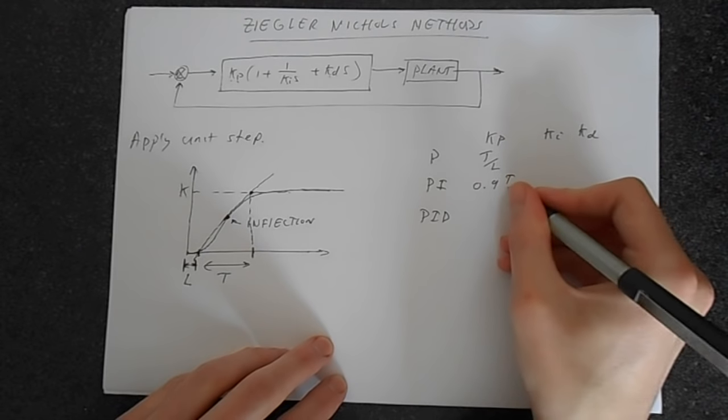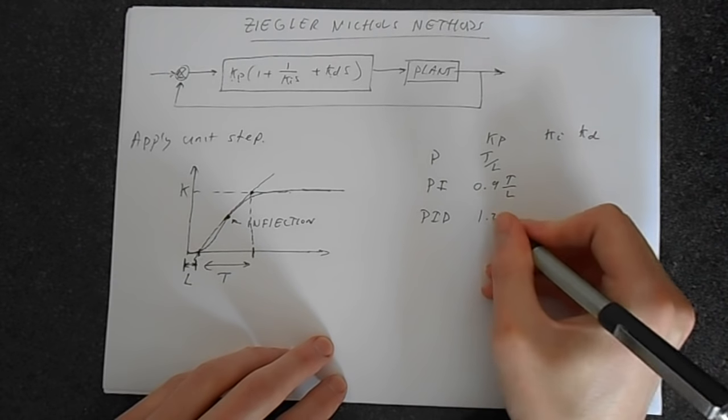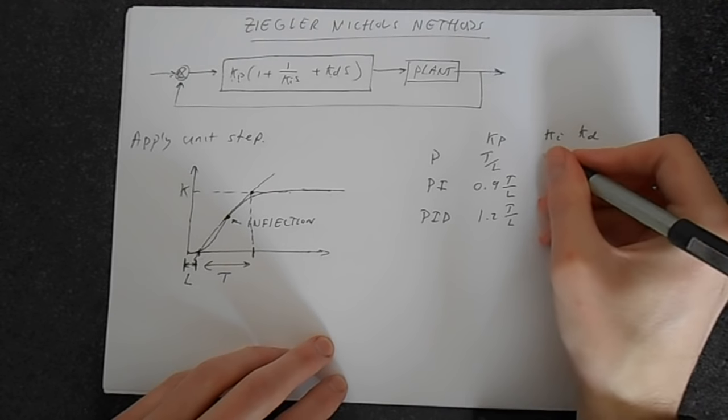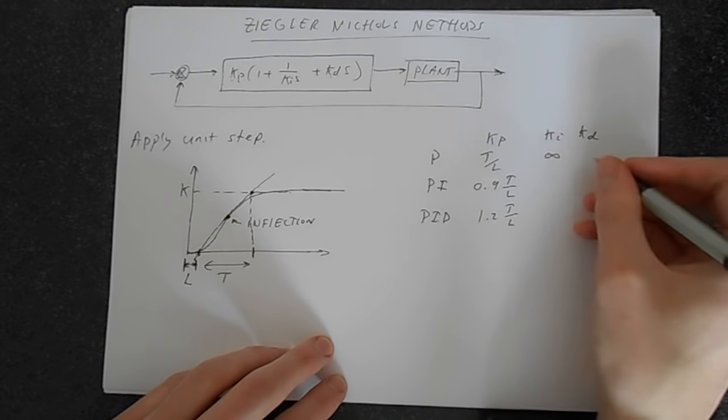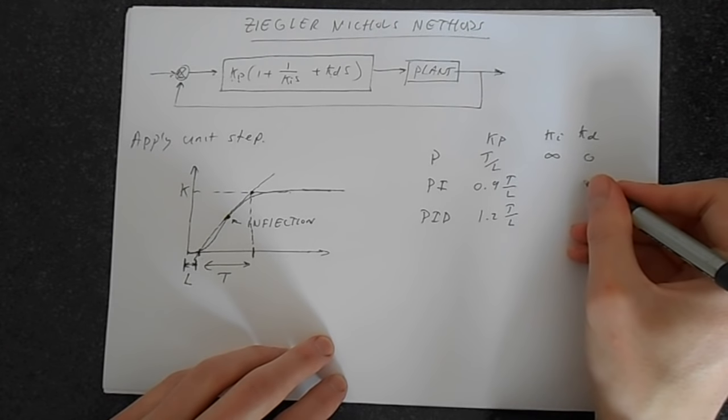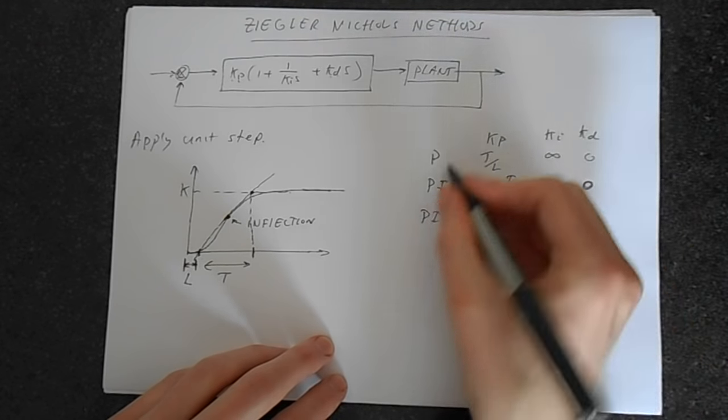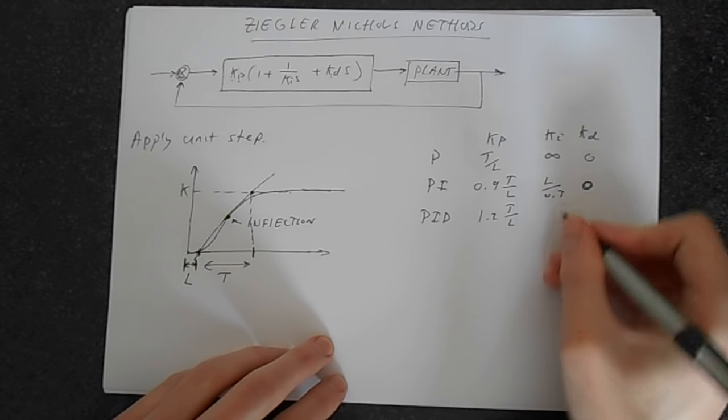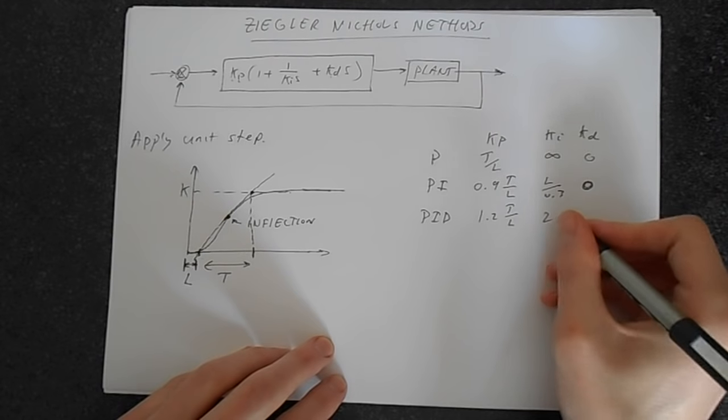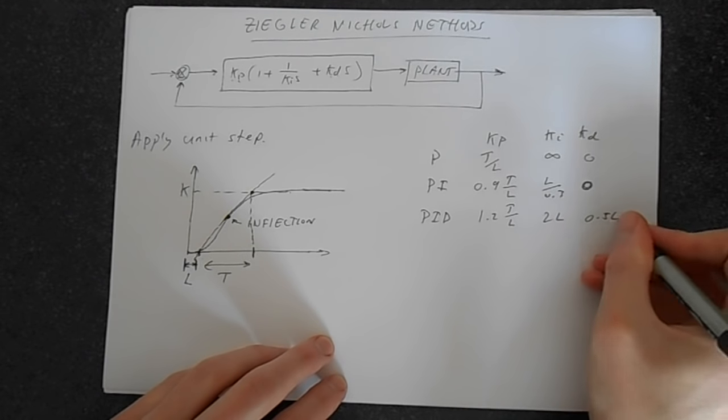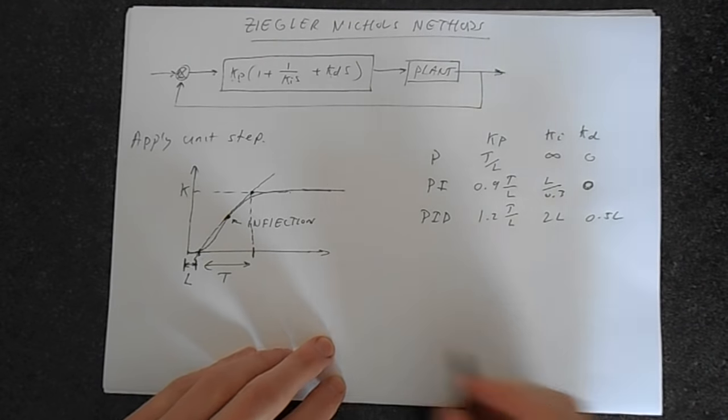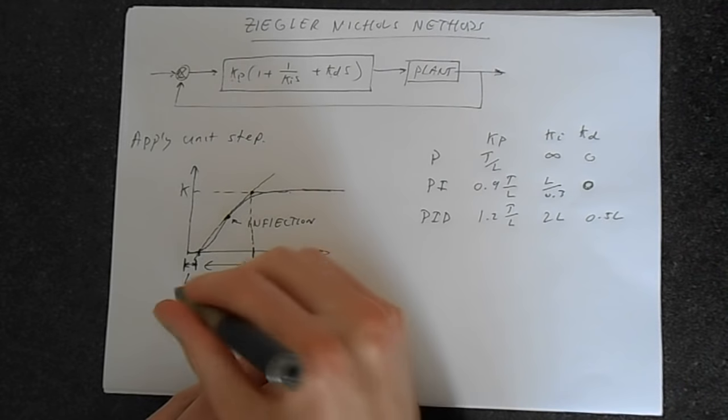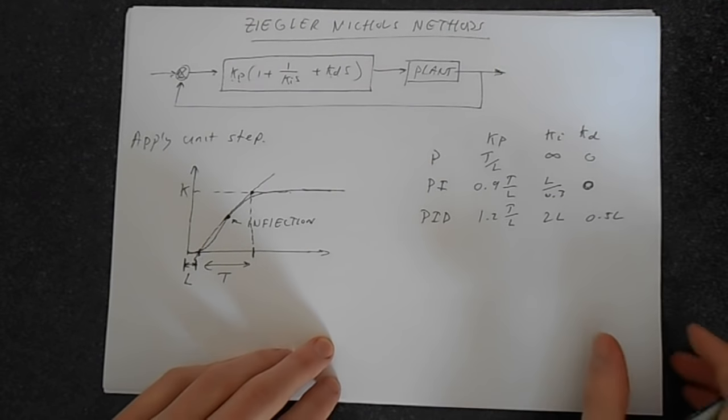0.9 T over L. 1.2 T over L. This one is infinity, of course. That's 0. This is, of course, 0, because you've got no D here. This should be L over 0.3. This should be 2L. And this should be 0.5L. So use this table once you've got your T and your L, and you get all of the values that you need.